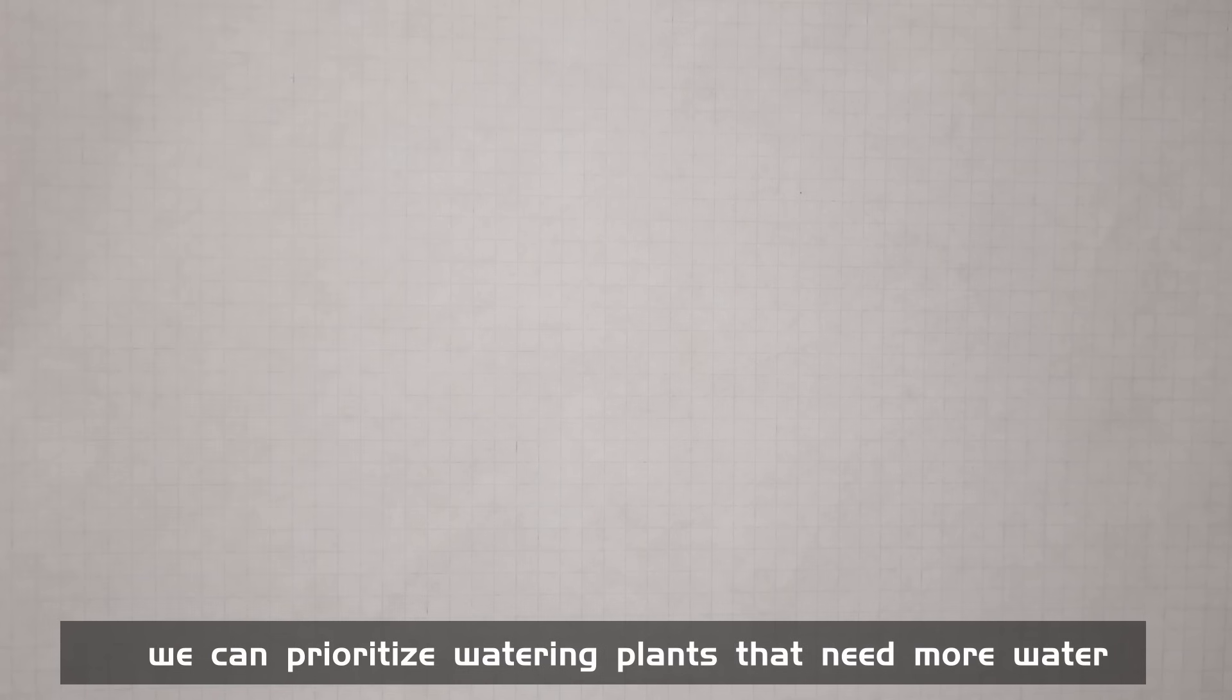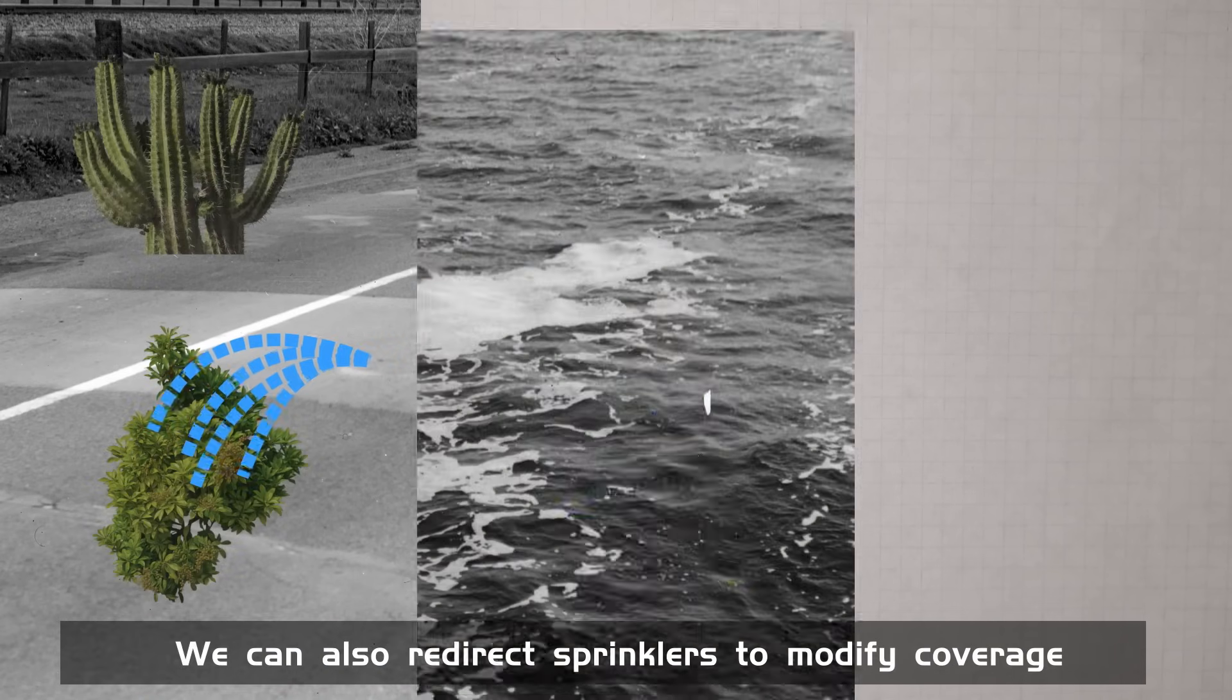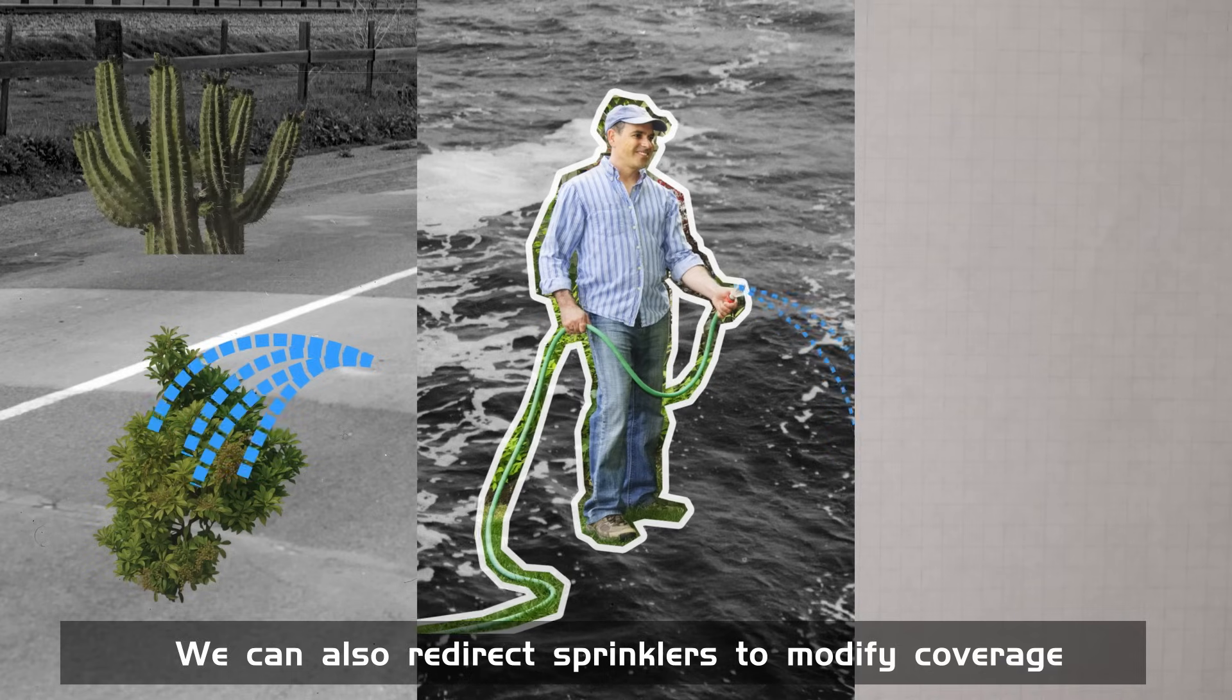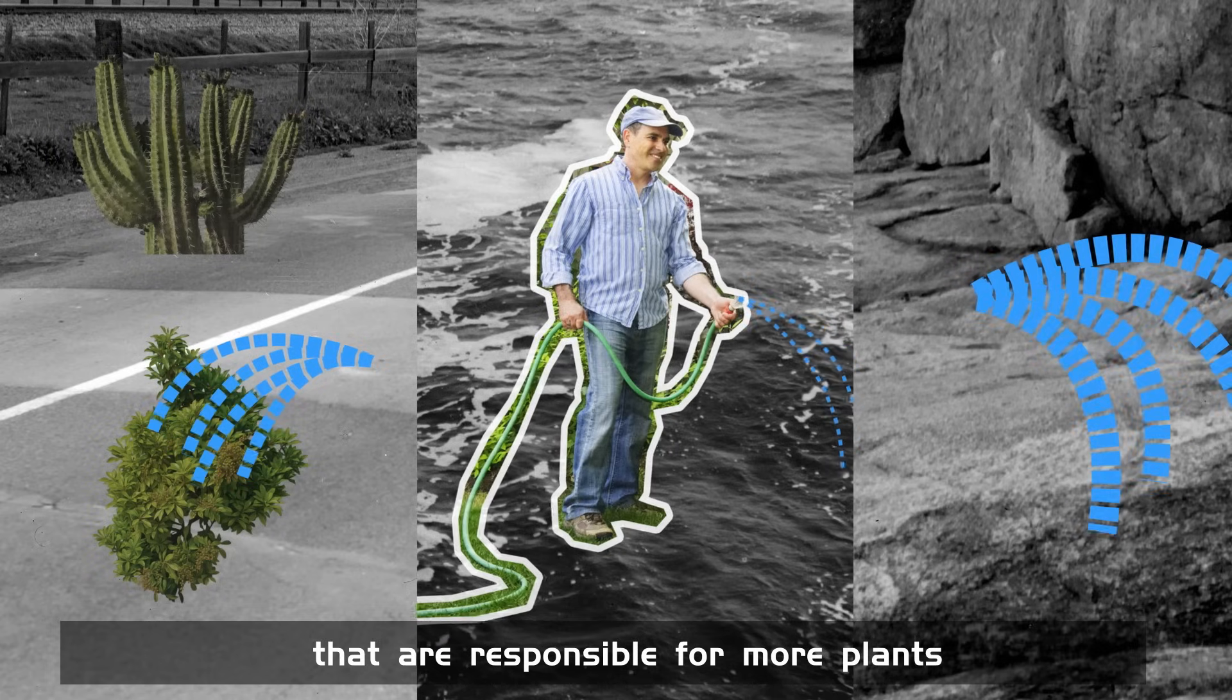For example, we can prioritize watering plants that need more water. We can also redirect sprinklers to modify coverage, or allocate more water resources to devices that are responsible for more plants.